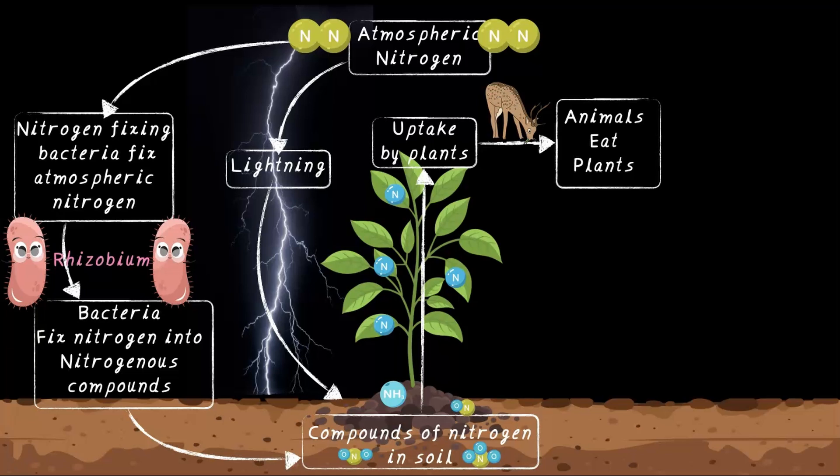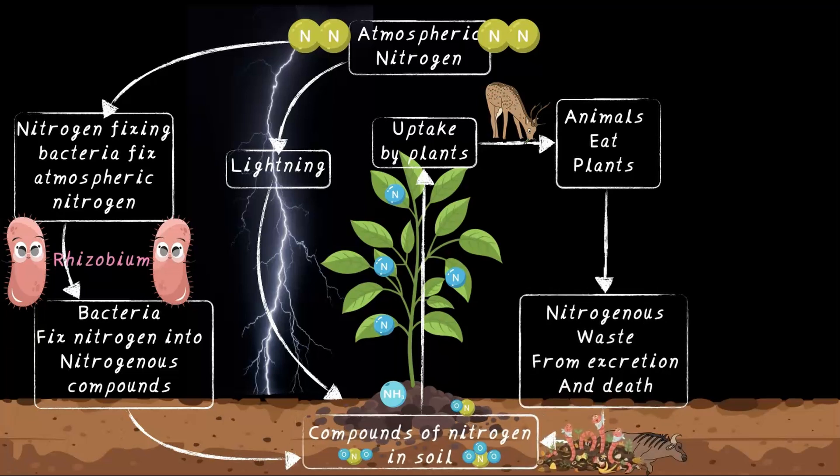This nitrogen is now used by these animals for various life processes in their bodies, helping them grow strong and healthy. Here's where the cycle comes full circle: when animals eventually die, decomposer bacteria break down the nitrogen in the waste and dead matter, sending it back to the soil.